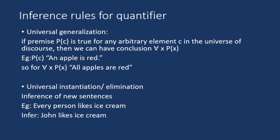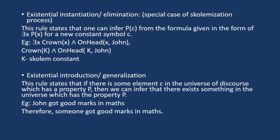This rule infers new sentences from the current available sentences. For example, every person likes ice cream. So if every person likes ice cream, then obviously John also likes ice cream. Now the third rule is existential instantiation or elimination.